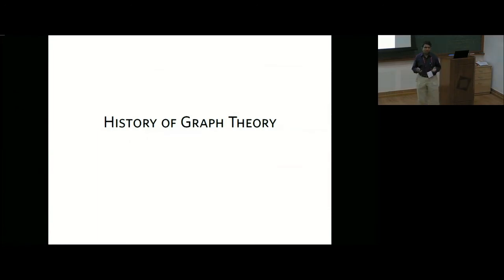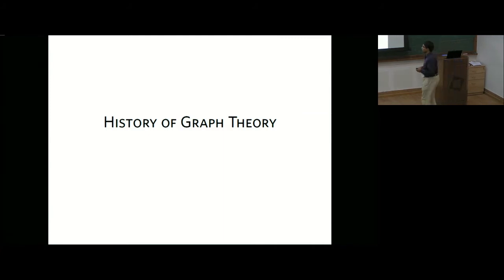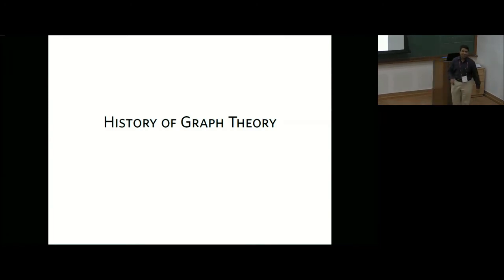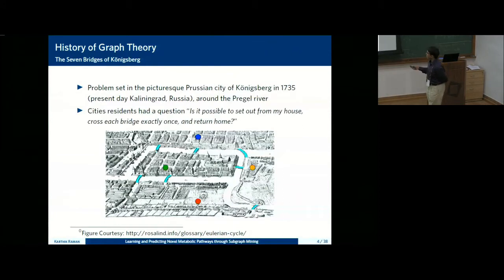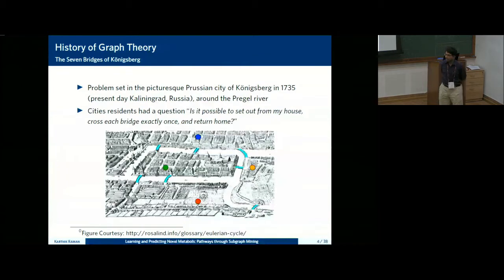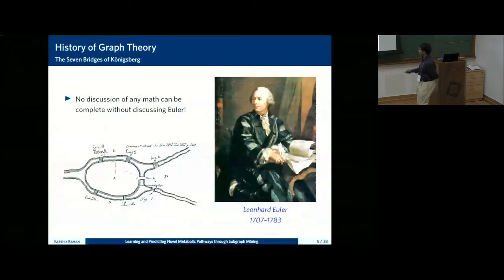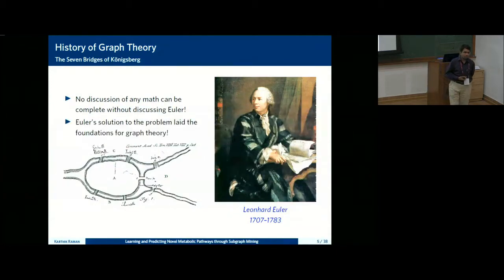I'll start with a brief history of graph theory. It's always good to pay your respects to Euler before giving any mathematical talk. Euler's contributions span so many branches of mathematics. This problem was set in the Prussian city of Königsberg in 1735. The city's residents asked: can I start from my house, cross all these bridges exactly once, and come back home? It is the classic introduction to graph theory. Euler made a diagram and his solution laid the foundations of graph theory.